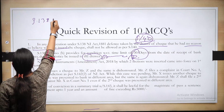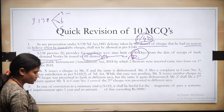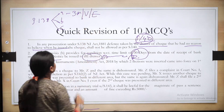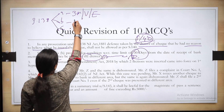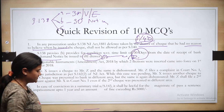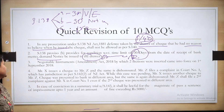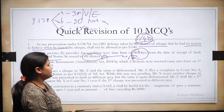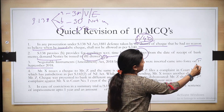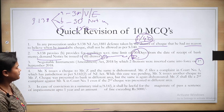Section 138 has three provisos — A, B, and C. Proviso A: the check must be presented to the bank within three months or within its validity period, whichever is earlier. Proviso B: notice must be given within 30 days of receiving the bank memo. There is also a proviso providing for 15 days. Third revision point: the Negotiable Instrument Amendment Act 2018, which inserted two sections, came into force on 1st September 2018.